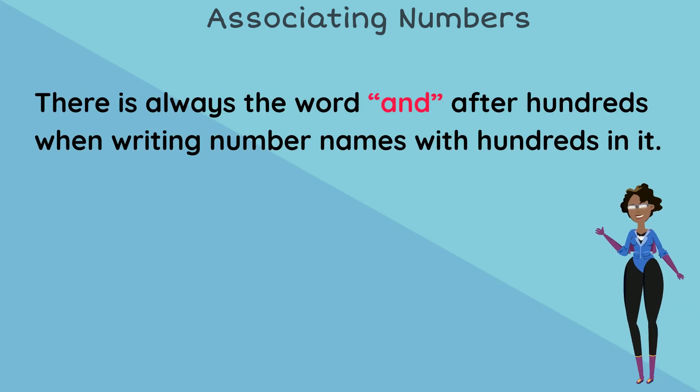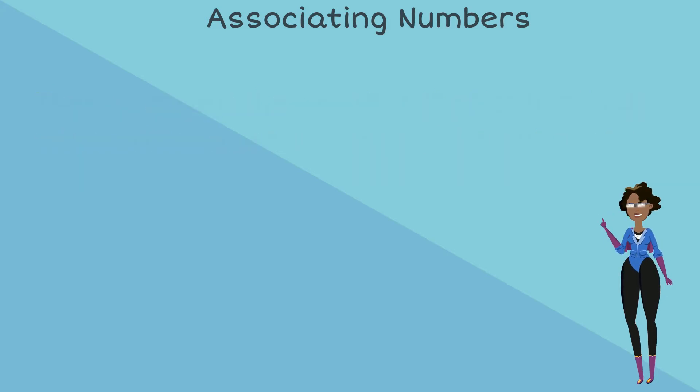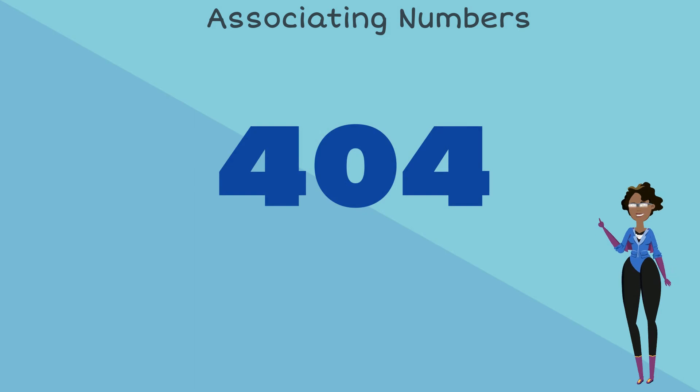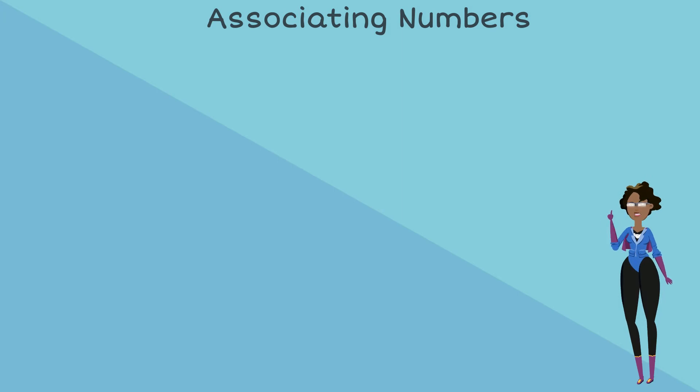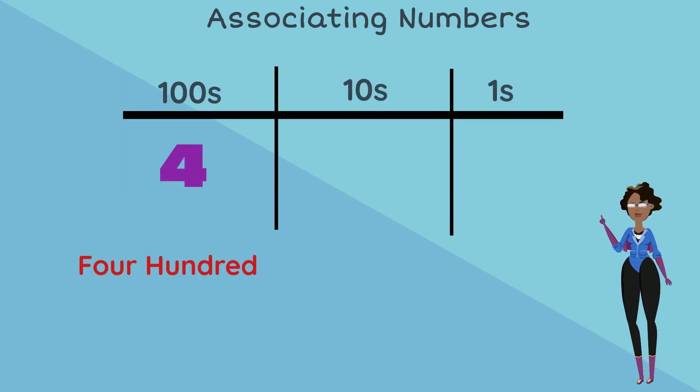There's always the word 'and' after 100s when writing number names with 100s in it. Let's do another example. Look at this number. This number in words is 400 and 4. 4 is in the 100s place, that's why it's 400 and there are no 10s. So we go straight to our 1s place and there's a 4, so it's just 4.